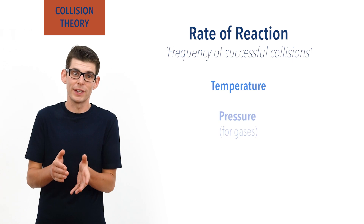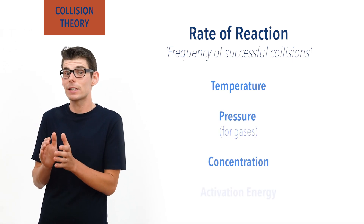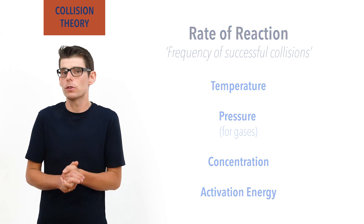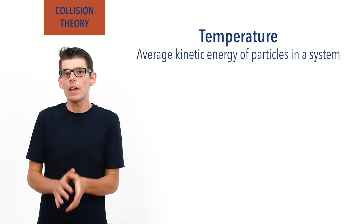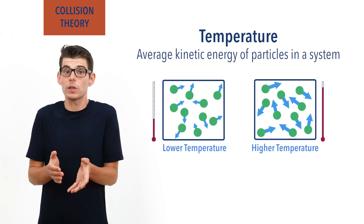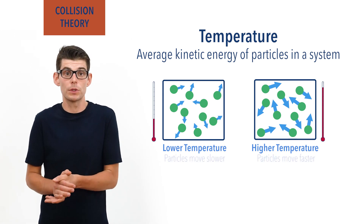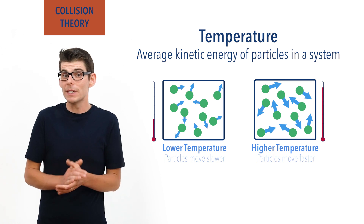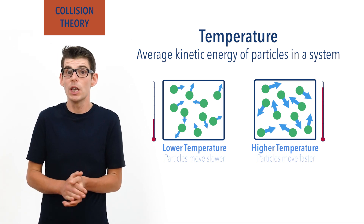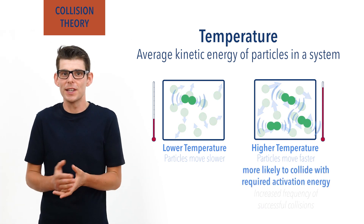Temperature, pressure, concentrations of reactants, and the activation energy needed. As temperature is based on the average kinetic energy of the particles, if the temperature of the reaction system is increased, the particles are effectively given more kinetic energy and therefore move faster as a result. This means it is more likely that two particles will end up colliding with the required activation energy, increasing the frequency of successful collisions.